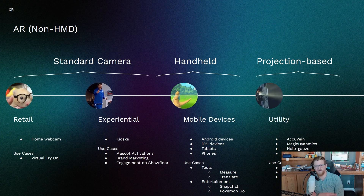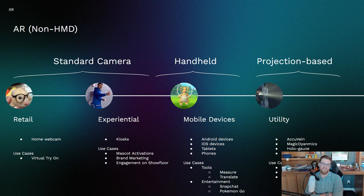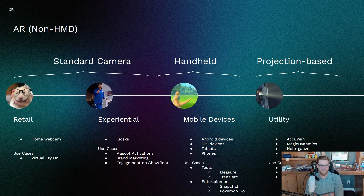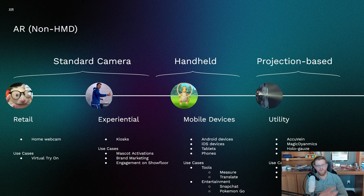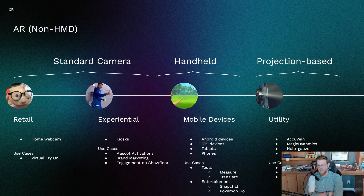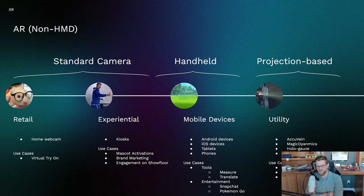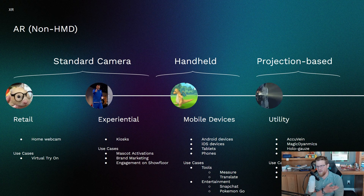Kiosks at Maverick Stadium, the American Airlines booth, or at DFW Airport might have brand activations, mascot activations, marketing, etc. There's also CES and show floor engagement that you can drive through augmented reality displays that live in a static booth. Then you have handheld — your typical iPhone, iOS devices, Android devices, tablets, phones, etc. — and typically they fall into either a utility tool use case for measuring and translating, or an entertainment use case for things like Snapchat, Pokémon Go, etc.